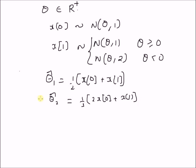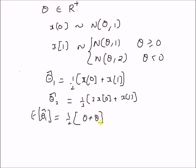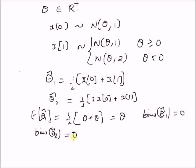Clearly, it can be easily shown that both estimators theta-hat₁ and theta-hat₂ have zero bias. The expectation of theta-hat₁ is (1/2)(E[x₀] + E[x₁]) = (1/2)(theta + theta) = theta. Therefore, the bias of theta-hat₁ is 0. Similarly, it can be easily shown that the bias of theta-hat₂ is also equal to 0.